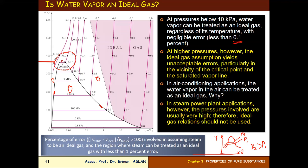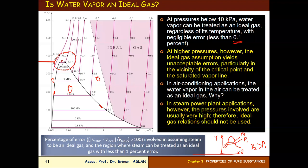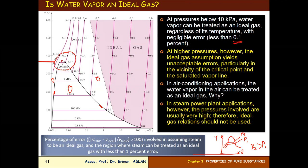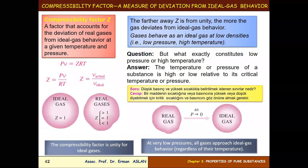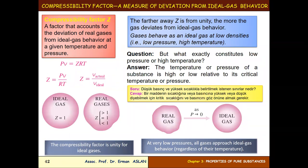Because in air conditioning, the pressure of the water vapor in the air is well below 10 kilopascal — that is why it is treated as an ideal gas. But in steam power plant applications, the pressures involved are usually very high, so ideal gas relations should not be used. Gases behave as an ideal gas at low densities, low pressures, and high temperatures.